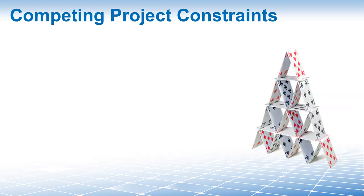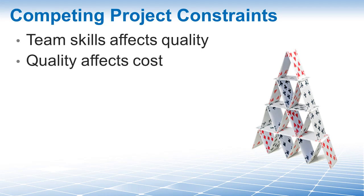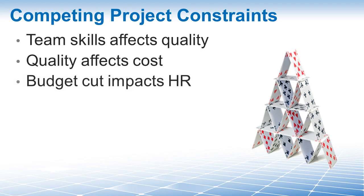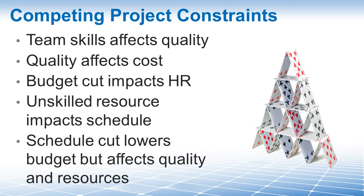Here are some examples. The skill level of your resources will affect quality — the better they are, the higher quality you can produce. Increasing quality requirements will affect cost — you have to invest more time into delivering high-quality products. If you cut your budget, that means you cannot hire skilled resources. If you have unskilled resources, that will affect your project schedule — it will most likely take much longer to finish. And if you then cut your schedule back by two weeks, yes, that will lower your budget, but it will also affect your quality and resources. As you can see, competing project constraints — one can affect one or many others.